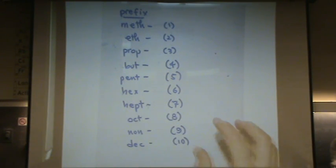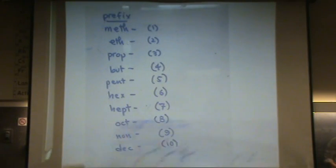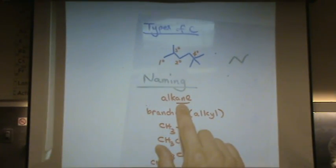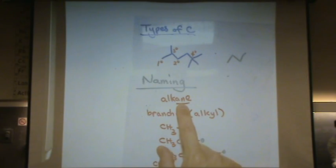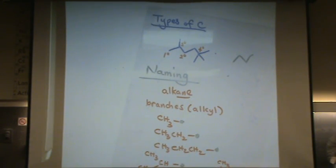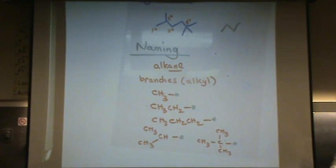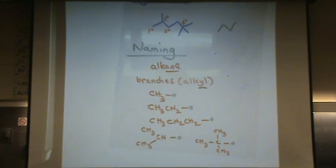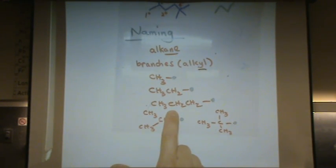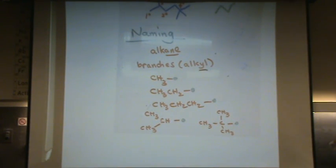So let's put this together. If you're talking about something that's not a branch, then your prefix goes with the A-N-E suffix. So octane, propane, butane, ethane, et cetera. If you're talking about something that is a branch, then your suffix is Y-L. So, for example, this would be methyl, ethyl, propyl, and butyl, pentyl, et cetera, for bigger and bigger branches.